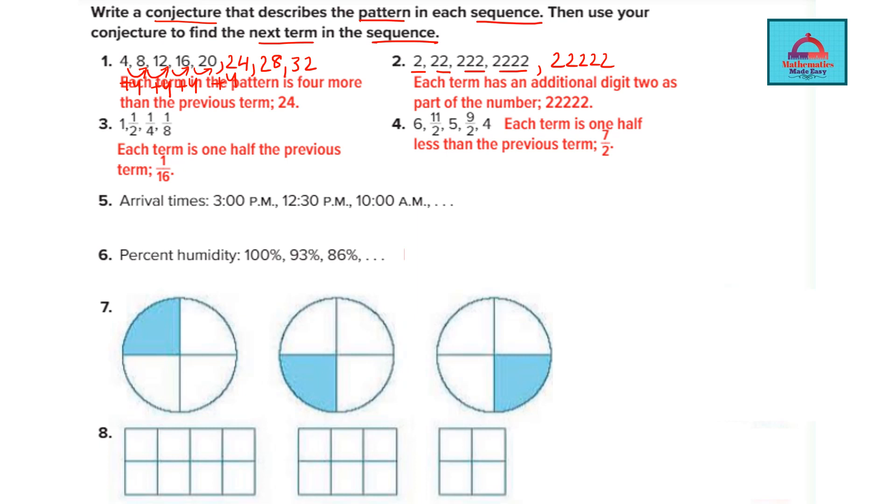Next you observe this one here it becomes half. It is divided by 2 then divide 1/2 by 2 you get 1/4. So every time it is becoming half. So the next term would be 1/16.